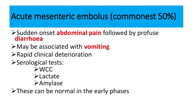First, let's consider acute mesenteric embolus — it is the commonest cause at about 50%. The clinical features of acute mesenteric embolus are abdominal pain followed by diarrhea. When there is abdominal pain with a large amount of diarrhea, we should consider acute mesenteric artery embolus. It may also be associated with vomiting.